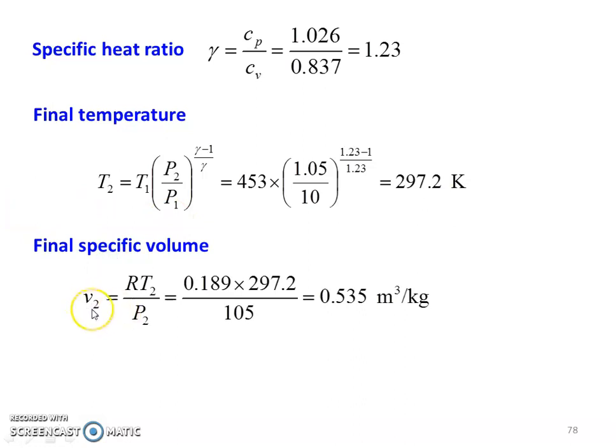Final specific volume V2 equal to RT2 by P2. So 0.189 into 297.2 divided by 105 equal to 0.535 m3 per kg.